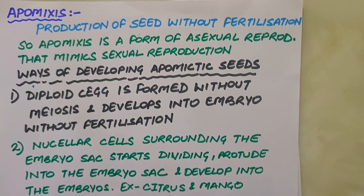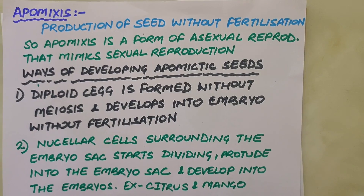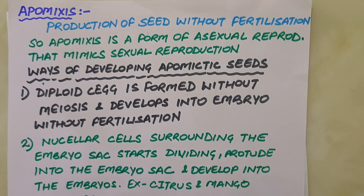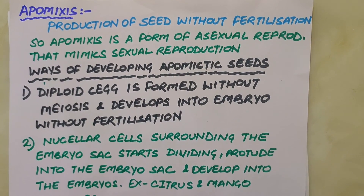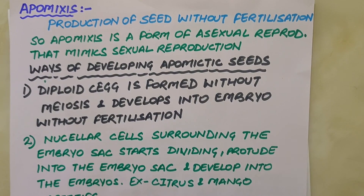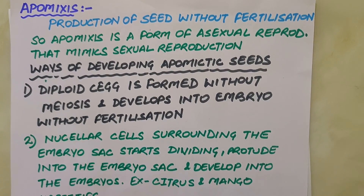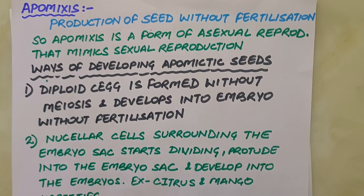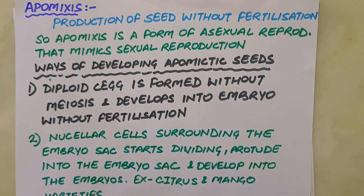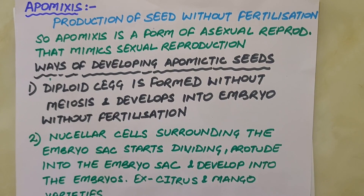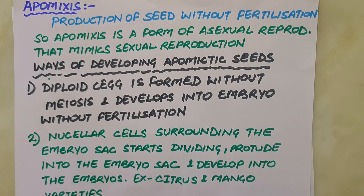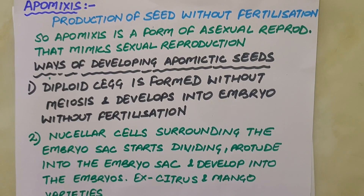This is all about pollination, its types, agents of pollination, their adaptations, outbreeding devices, artificial hybridization, double fertilization, endosperm and embryo development, types of fruits and seeds, and about apomixis and hybrid seeds. Thank you very much.